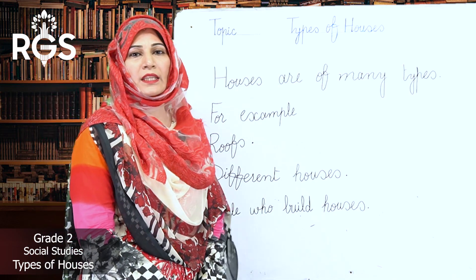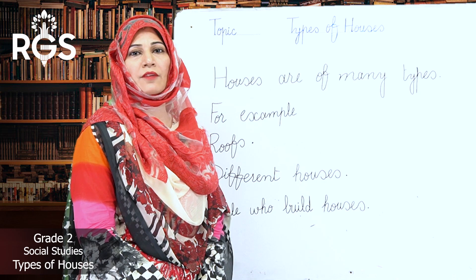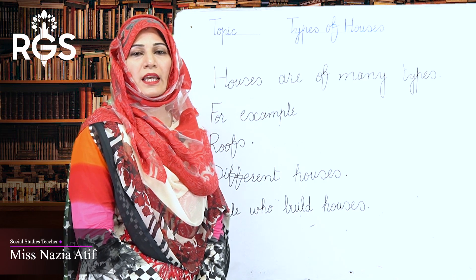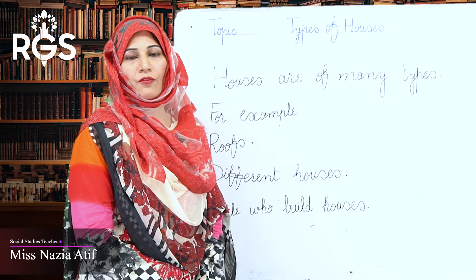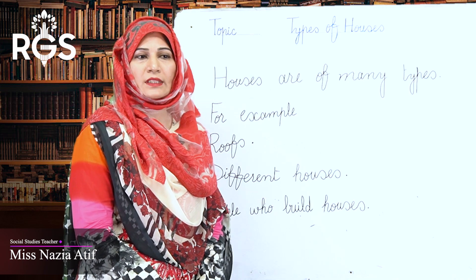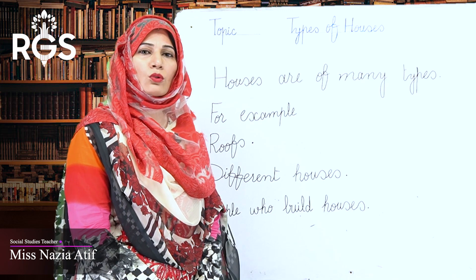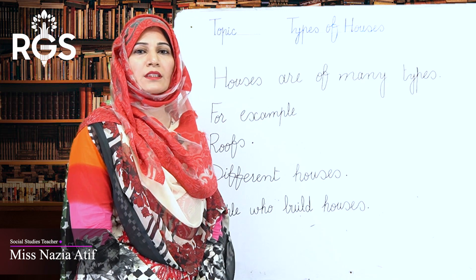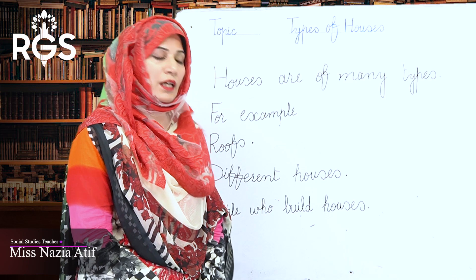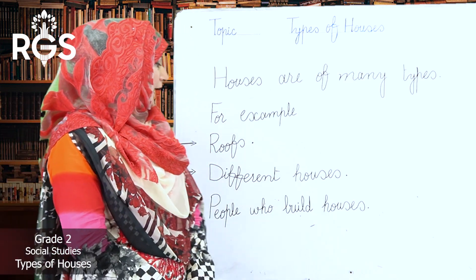On the other hand, we have igloos. These are the types of houses which Eskimos live in. They make igloos from big blocks of ice. Igloos are always warm inside. These are also types of houses.